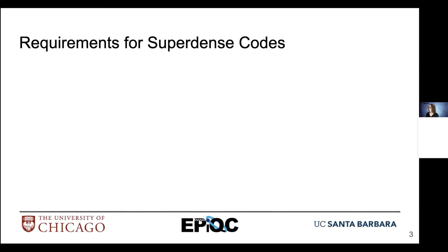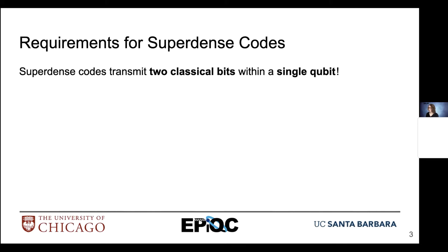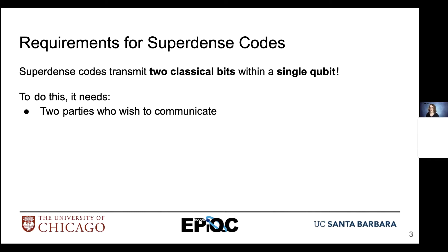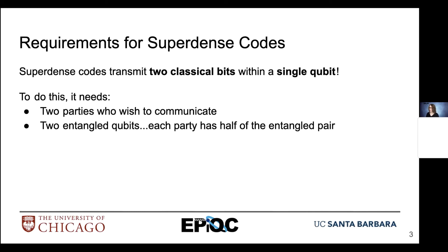What are the requirements for superdense codes? Superdense codes transmit two classical bits within a single qubit. In order to do this, we need two parties who want to communicate with each other and two entangled qubits. Each party has one half of this entangled pair — Alice and Bob, the two parties who wish to communicate.